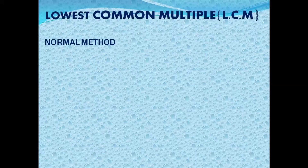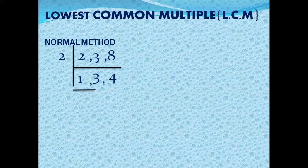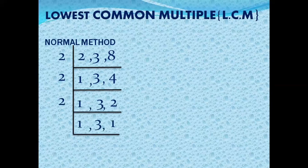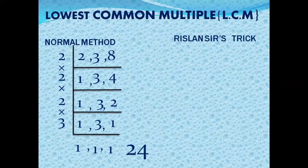Next question: LCM of 2, 3, and 8. Normal method — divide by 2: 2 becomes 1, 3 remains, 8 becomes 4. Again by 2: 1 remains, 3 remains, 4 becomes 2. Again by 2: 1, 3 remain, 2 becomes 1. Divide by 3: 3 becomes 1. Multiply: 2×2×2×3 = 24. LCM is 24.